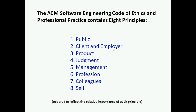Now, the ACM code of ethics contains eight principles. These principles are shown here and they are sorted to reflect the relative importance of each principle. The first and most important is the public, then client and employer, product, judgment, management, profession, colleagues, and self.